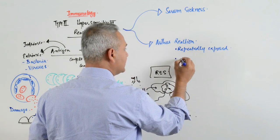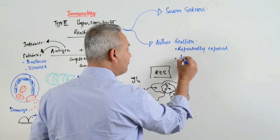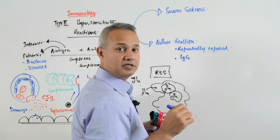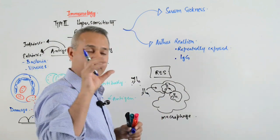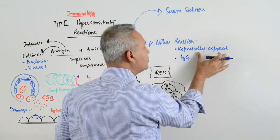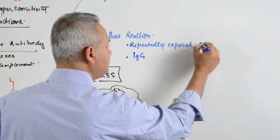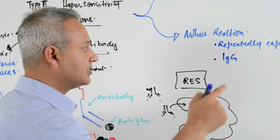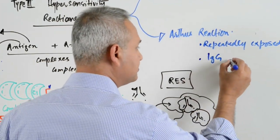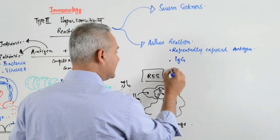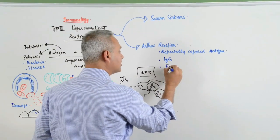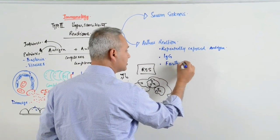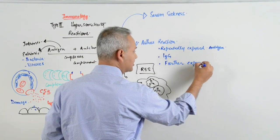After that there is enough IgG developed, enough IgG against the exposed antigen. There is repeated exposure to an antigen, enough IgG is developed in the body, and then with further exposure reaction occurs.